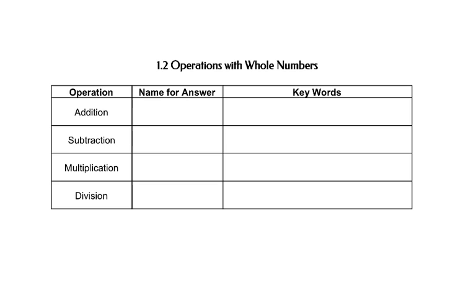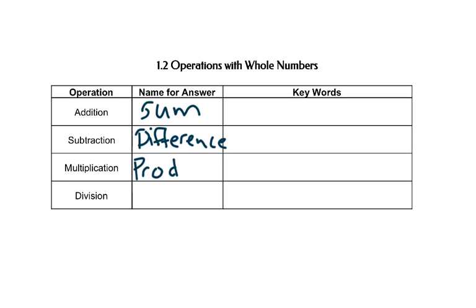First thing is we need to know a little bit of vocabulary. The answer to an addition problem is called a sum. The answer to a subtraction problem is called a difference. The answer to a multiplication problem is called a product. And the answer to a division problem is called a quotient.